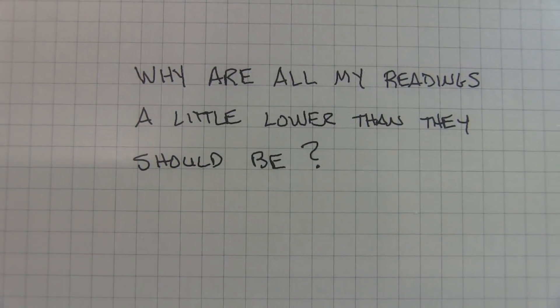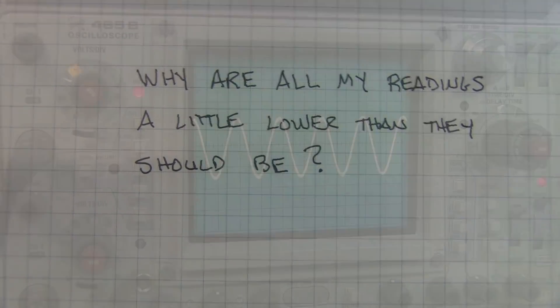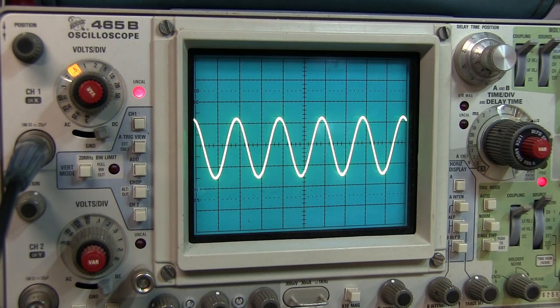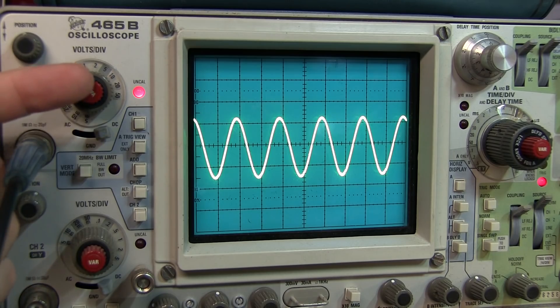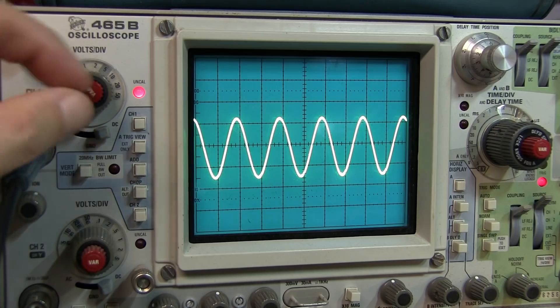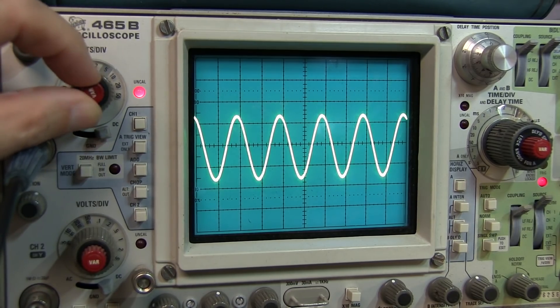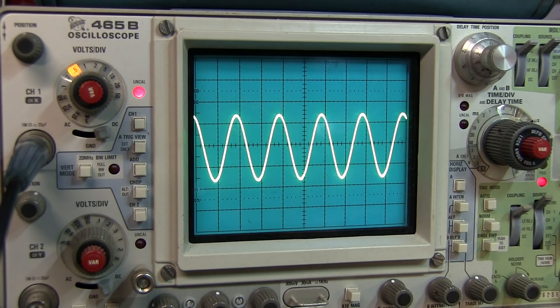Why are all my readings just a little bit lower than they should be? Now, there's a couple reasons this can happen. But one very common reason, especially on these analog scopes, is right here. Typically, concentric with the volts per division knob is a variable amplitude control knob, which actually varies the amplitude in effectively an uncalibrated way.